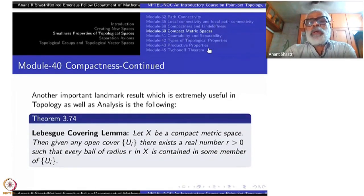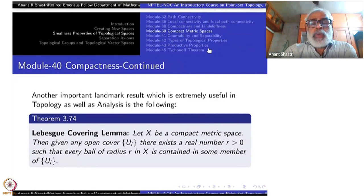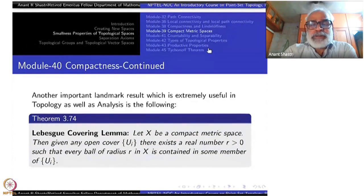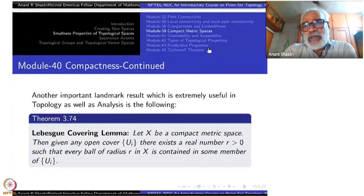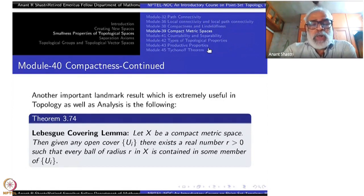Welcome to Module 40 of Quant-Set Topology Part 1. Today we will continue the study of compactness. I begin with one of the most important results about compact metric spaces — as important as the three big theorems we have proved for complete metric spaces, if not more. This is called the Lebesgue Covering Lemma.